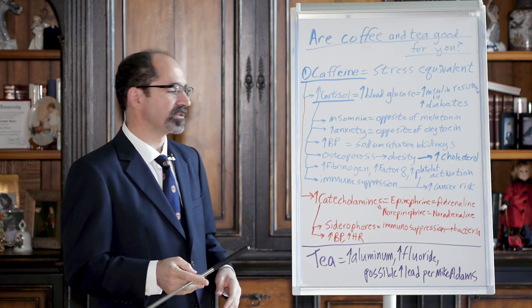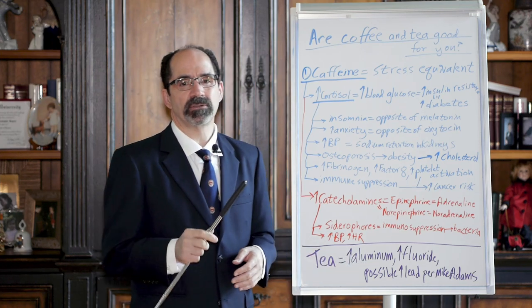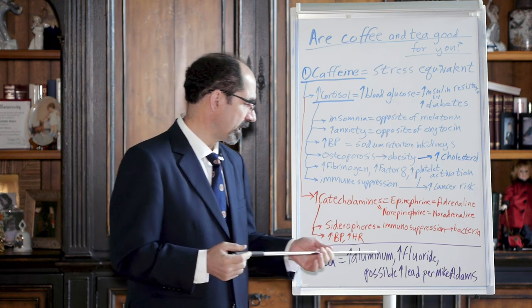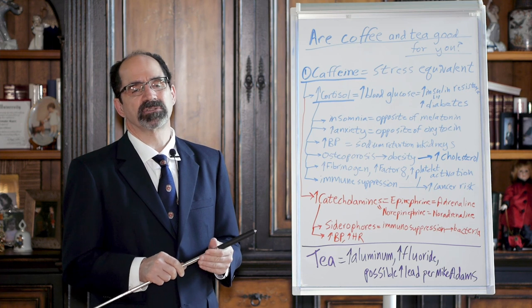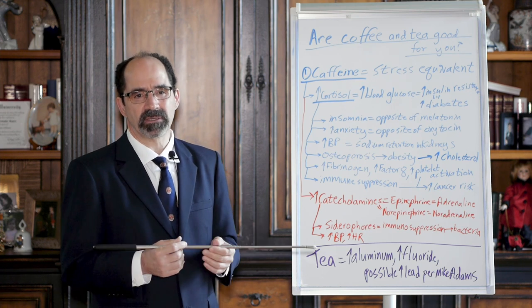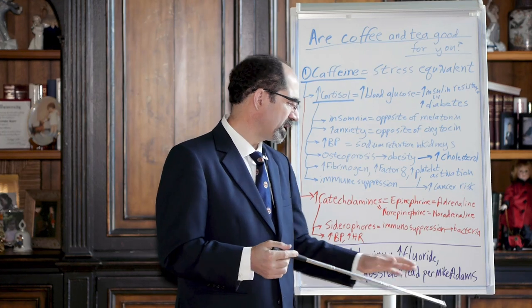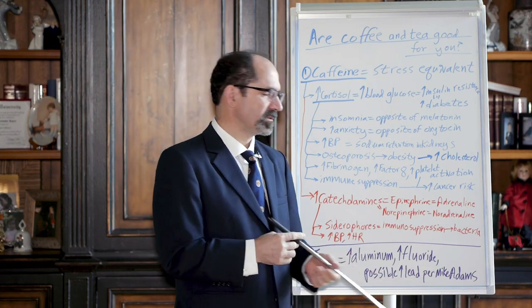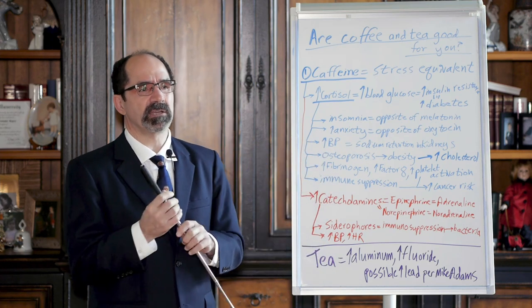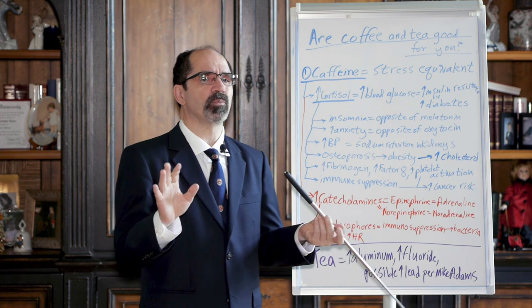Okay, what about tea? Tea's got additional problems. Tea has a tendency to concentrate aluminum. Aluminum is a neurotoxic substance. You don't want to be drinking that. It also has a tendency to concentrate fluoride. Fluoride is also potentially neurotoxic when you're drinking it. It's been shown to lower IQ. It might increase lead. I don't know how many brands do that. This guy, Mike Adams, is a scientist who tests food, and he claims that some teas have that. So I don't really know which ones have that. That might be a rare thing.